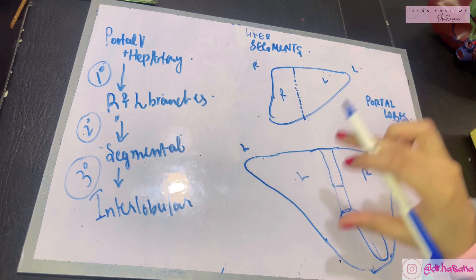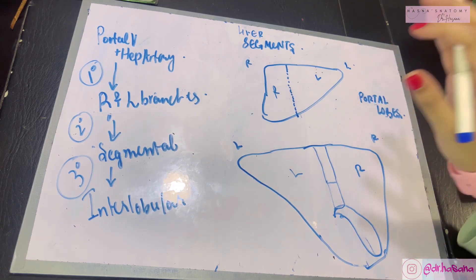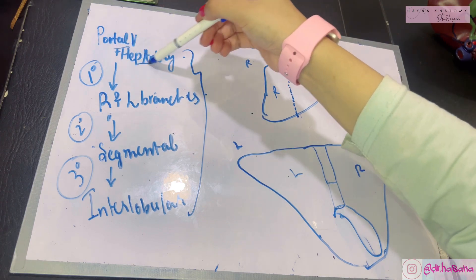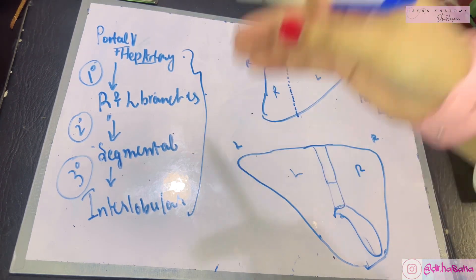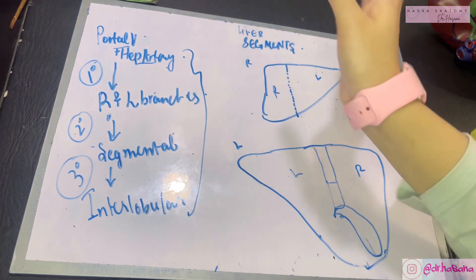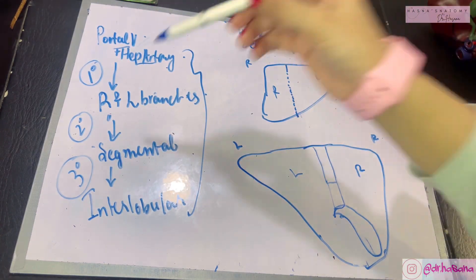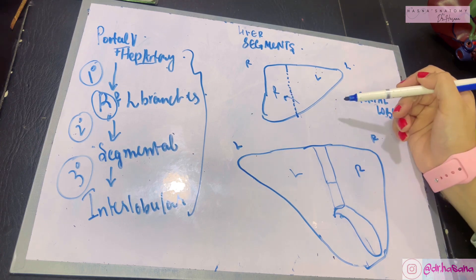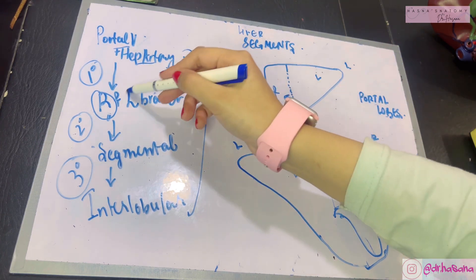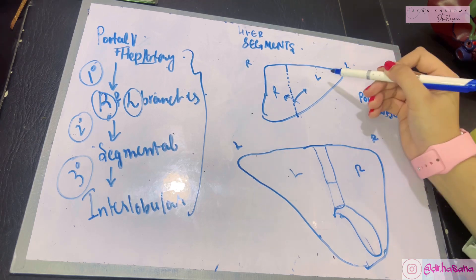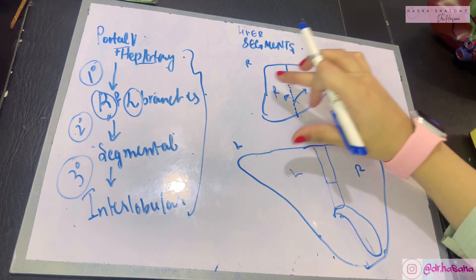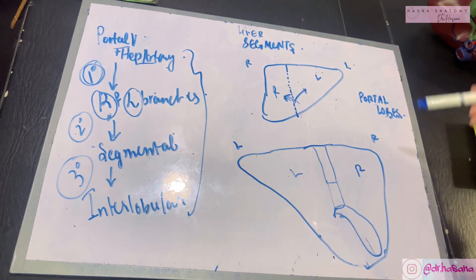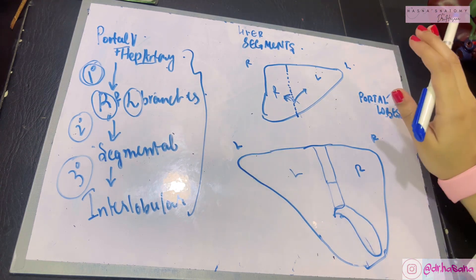We've divided the liver into right and left functional parts, also known as the right and left portal lobes. These are the functional lobes because the portal vein and the hepatic artery, coming in through the porta hepatis, are divided into a right branch and a left branch. The right branch independently supplies the right portal lobe and the left branch independently supplies the left portal lobe. These two are independent of each other, with their own primary blood supply.